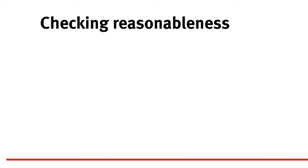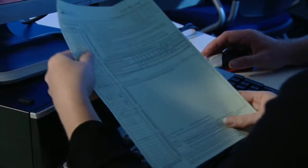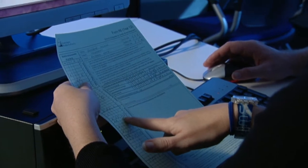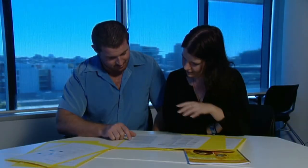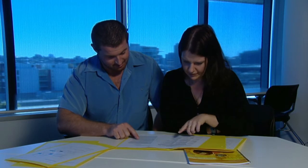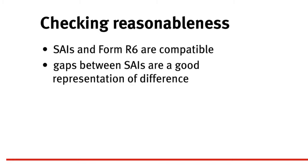SAI distributions should be compatible with the information on the Form R6. Even though SAIs and the Form R6 are two different representations of student performance and serve different purposes, they are derived from the same information – student folios of work. Therefore, there should be a relationship between the two. Teachers should check that gaps between student SAIs are a good representation of the actual difference between them. If students are close together on the Form R6, their SAIs should be more similar than those of students who are further apart.